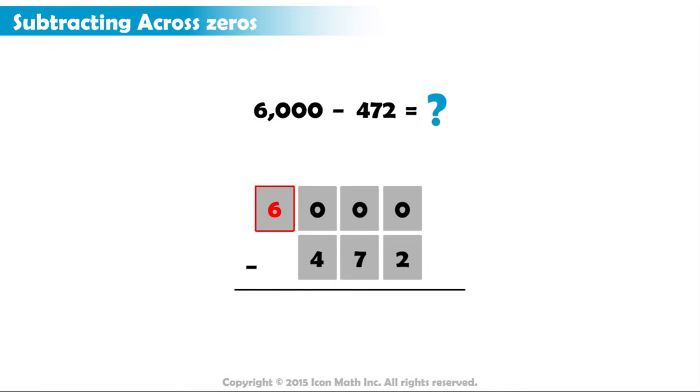So, we borrow a 1 from it. We cross off the 6 and write 5 above it. Then, we cross off the 0 in the hundreds place and write 10 above it.